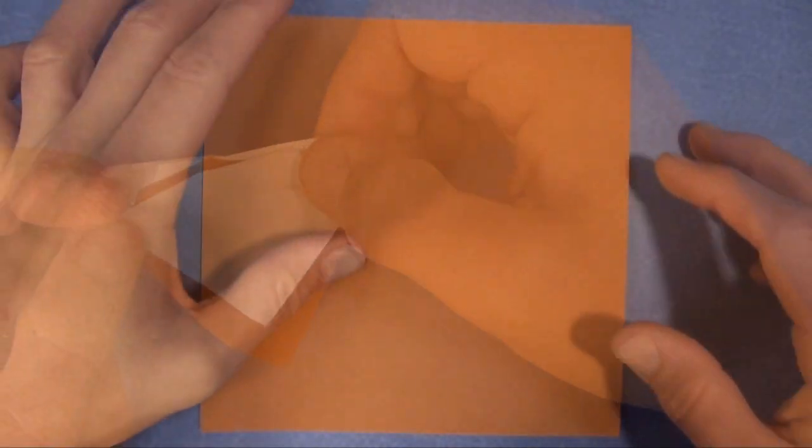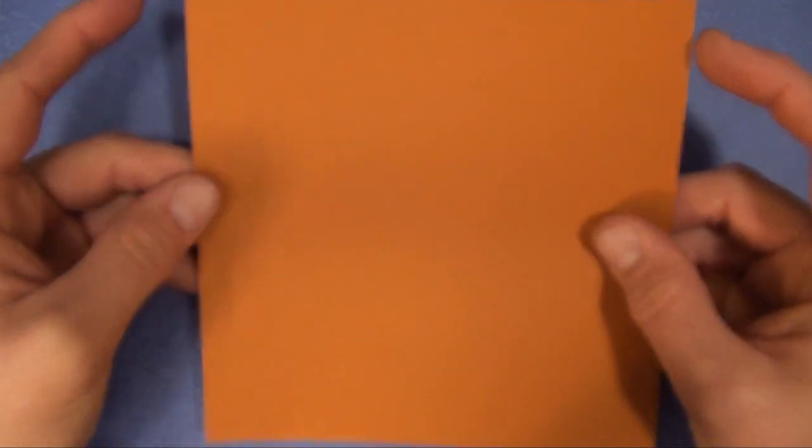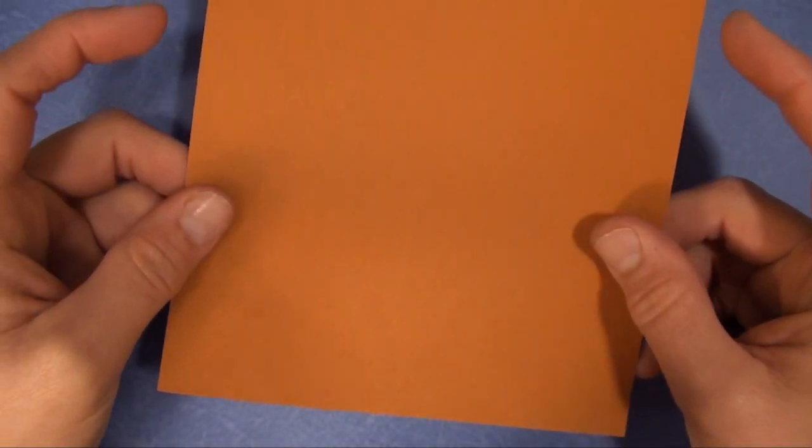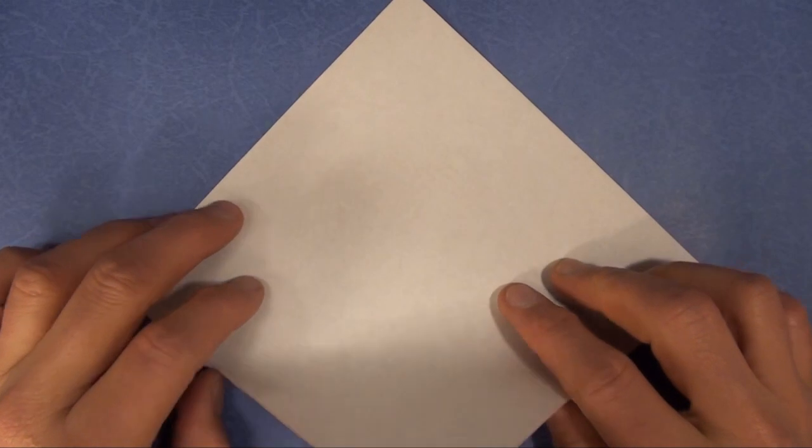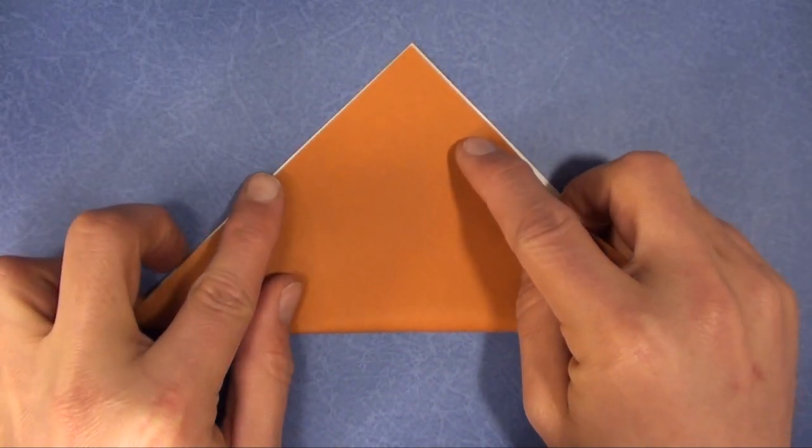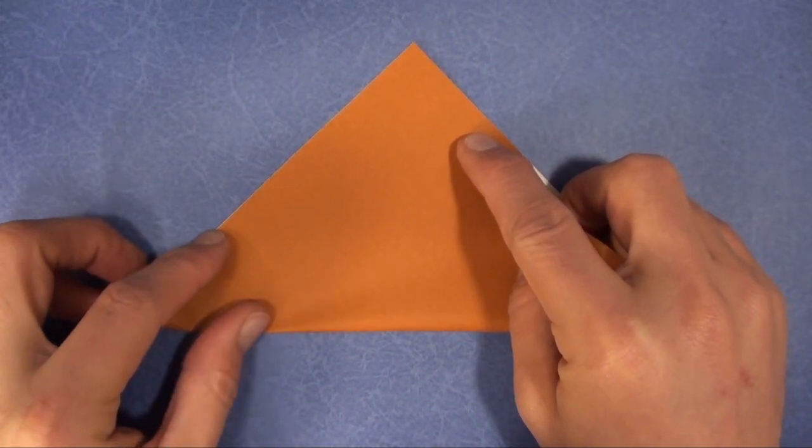Alright, so this model starts from a square of duo paper. That means paper that's colored differently on each side. And we're going to start out white side up, valley fold diagonally in half. A six inch piece of paper is good to fold.